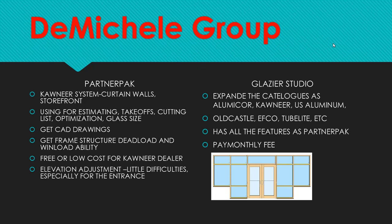Another equivalent — or basically the same — is called Glazier Studio. They developed it from Partner Pack and expanded the catalogs to not only Kawneer, but also Alumco, U.S. Aluminum, Oldcastle, Afco, TurboLite, and more. All the functions in Partner Pack are in Glazier Studio as well. Honestly, you need to pay about $500 setup, and then a monthly fee of $100 to $300 per month. The setup fee is one-time, though pricing may update every year or two.